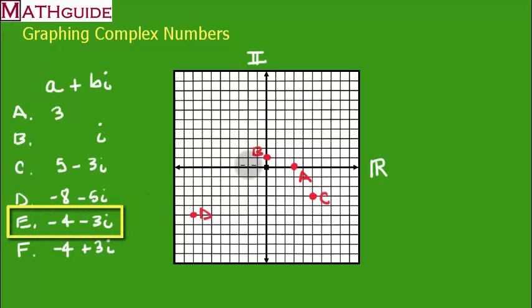Let's go to negative four. One, two, three, four, that's negative four. Minus three I, one, two, three. There's E.